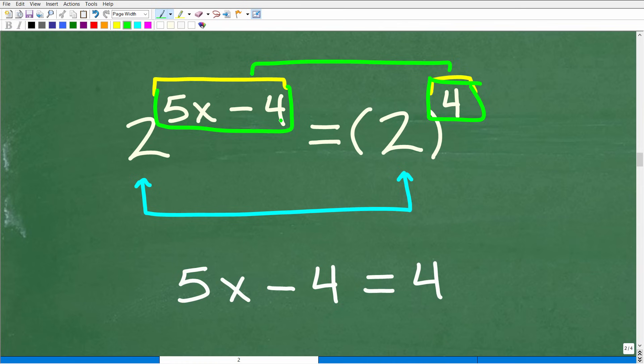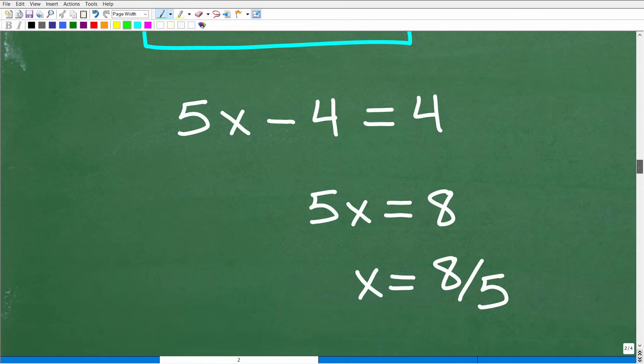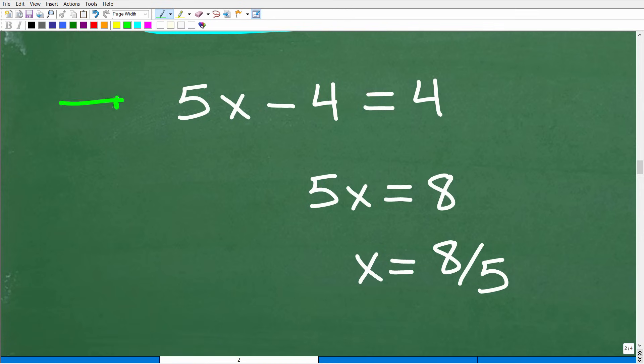Five x minus four is equal to four. Now we're back to like super basic algebra. We can solve this pretty easily. What we're going to do is just add four to both sides of the equation. So I get five x is equal to eight. Then I'm going to divide both sides of the equation by five. And I get x is equal to eight over five.